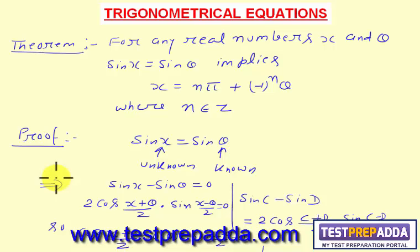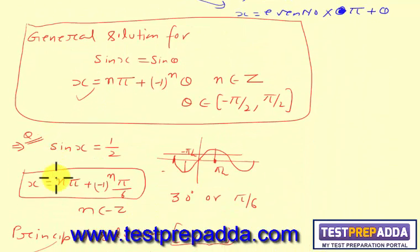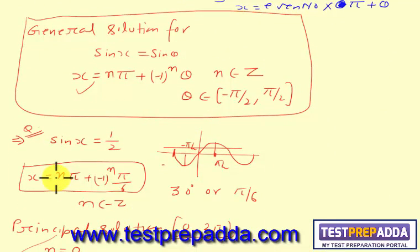To summarize: if sin x = sin θ, the general solutions are x = nπ + (−1)ⁿθ, where n belongs to integers, and θ is taken in the range −π/2 to π/2.